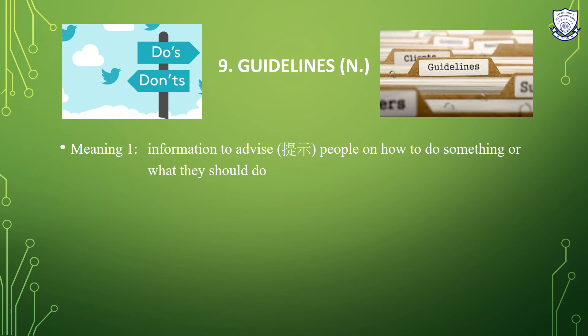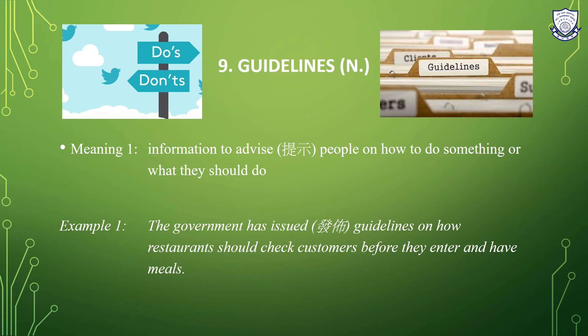Number nine: 'guidelines'. It is a noun. The meaning is information to advise people on how to do something or what they should do. Example: The government has issued guidelines on how restaurants should check customers before they enter and have meals. This word may seem difficult, but you actually see it in Chinese all the time — at school, in front of a restaurant, or when you watch TV.